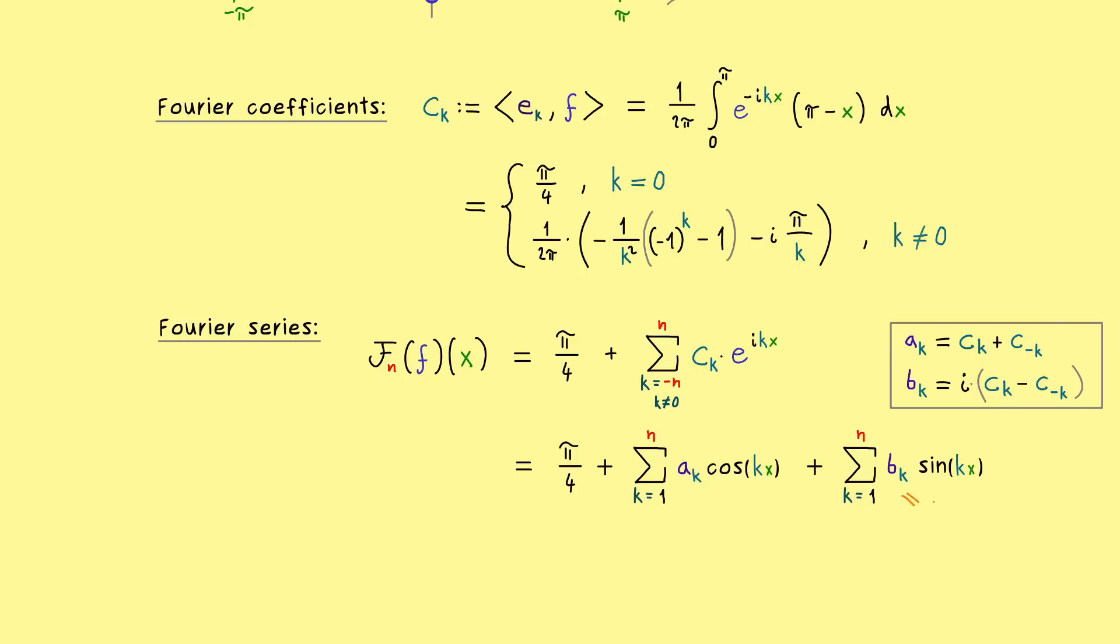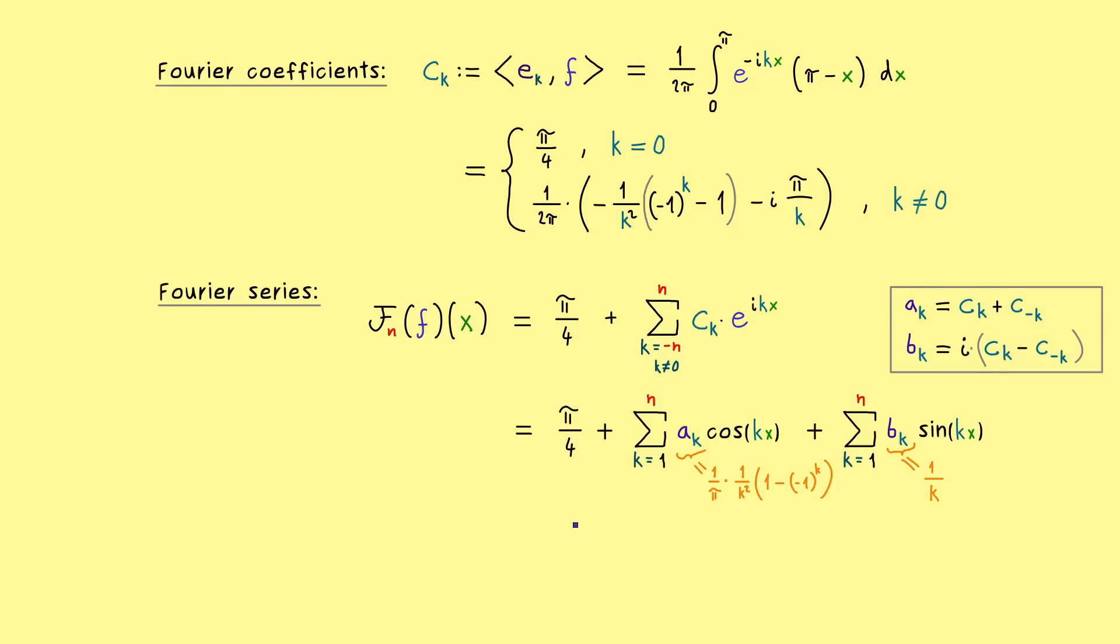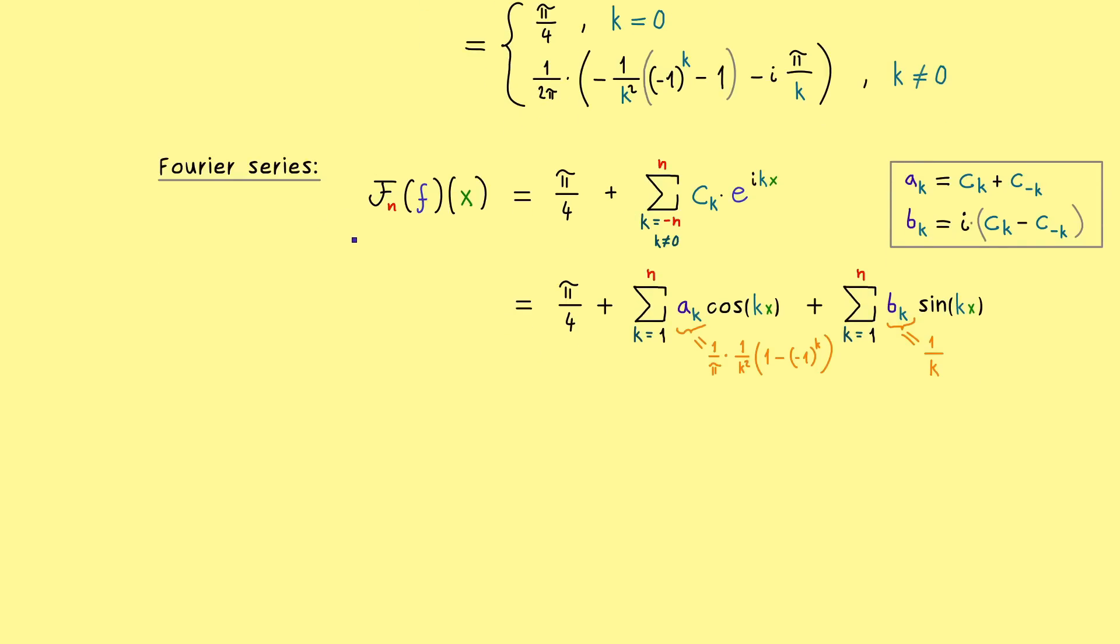Simply because in this case the coefficients a_k and b_k are real numbers as well. For example, if we calculate b_k, we just get out 1 over k. So this is quite simple, but on the other hand, a_k is a little bit longer. We get 1 over π times 1 over k² times 1 minus minus 1 to the power k.